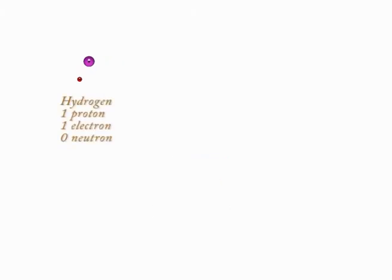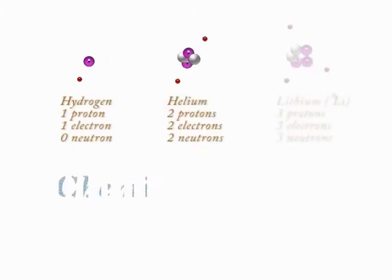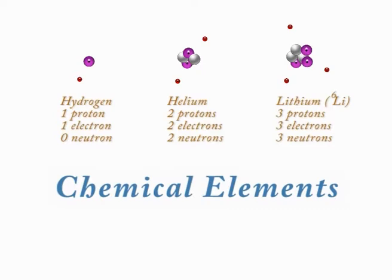Each time you add an extra proton to an atom, you get a new chemical element. But if you only add another neutron, you just get a heavier version of the same element called an isotope.